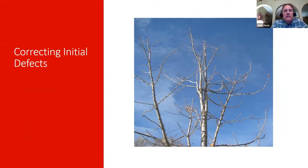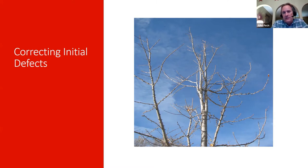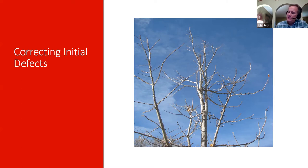Looking at initial structural defects, there are both good and bad things visible in this photo. Along the left side you can see branch angles that are really good — about 45 degrees. If you hold up your hand and look at your palm, that's the angle you want, where your thumb attaches to your hand in an L shape. The branches along the left side are arranged that way, but not so much on the right side.